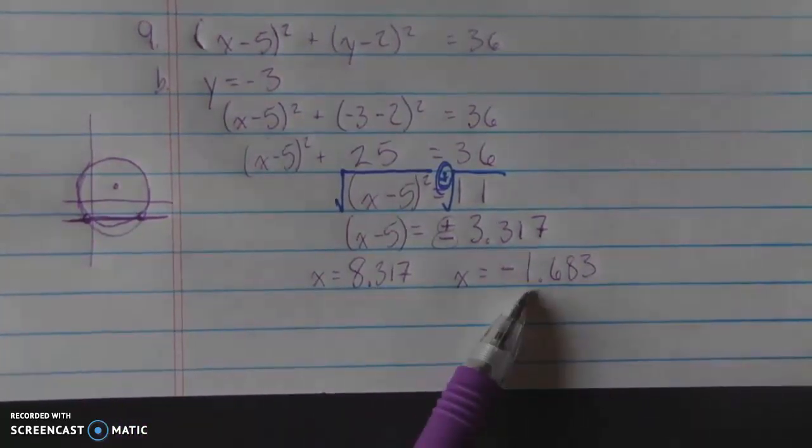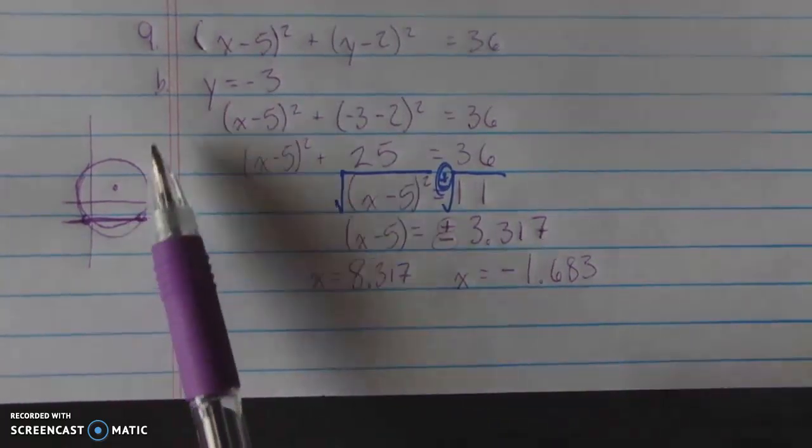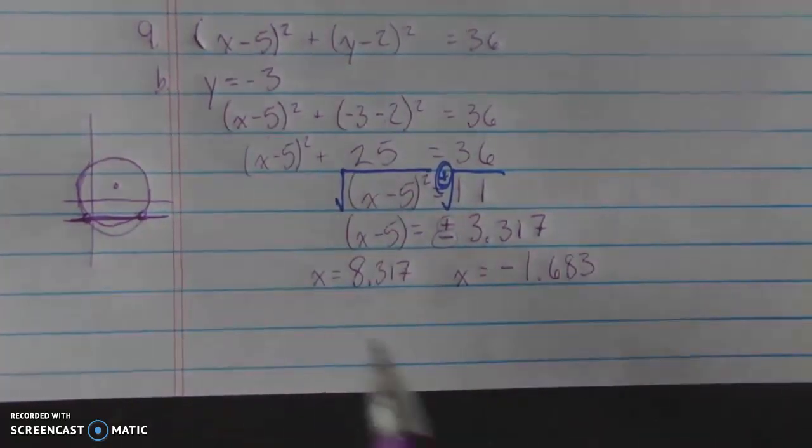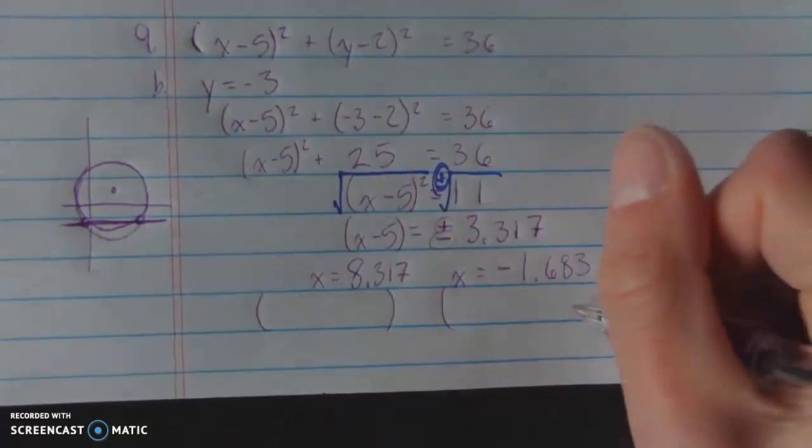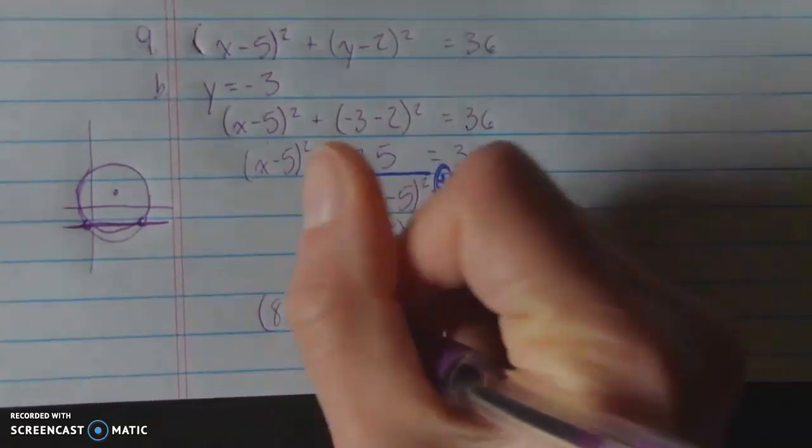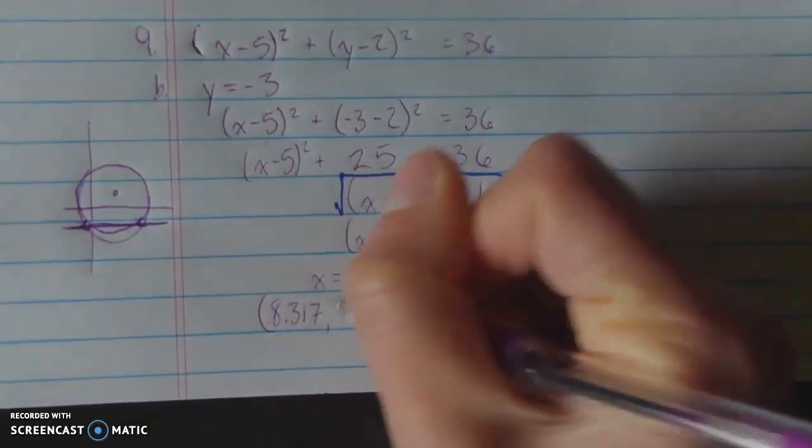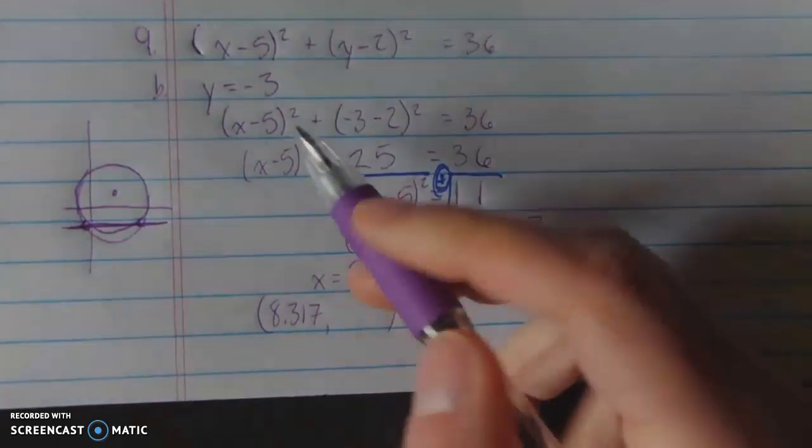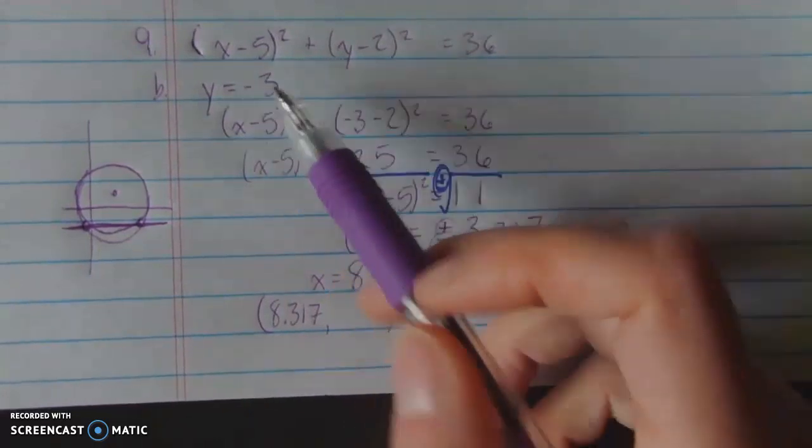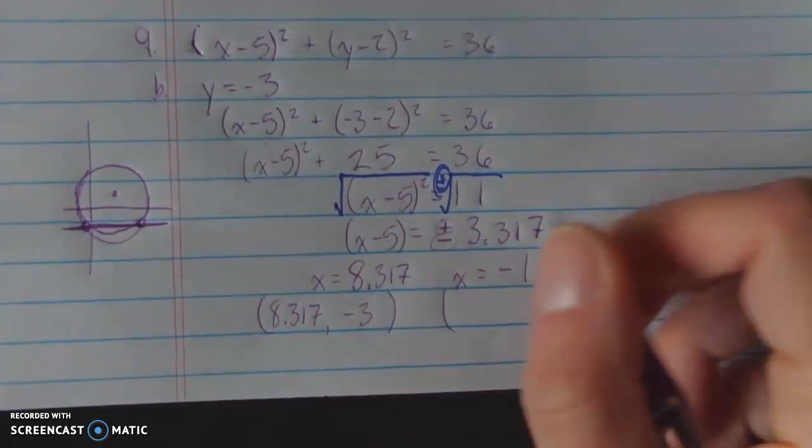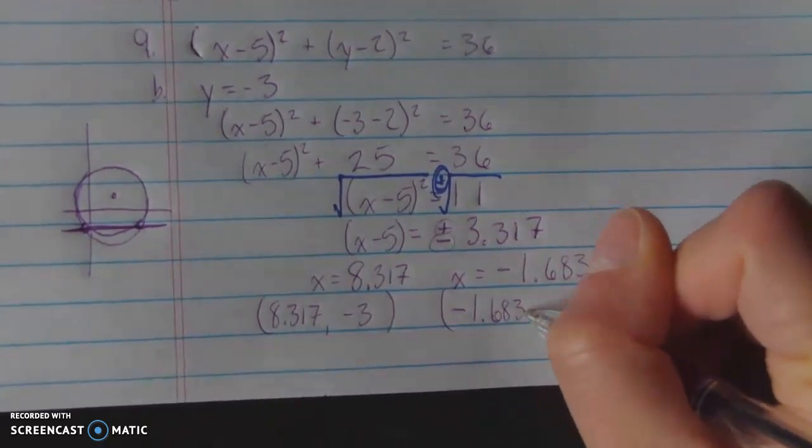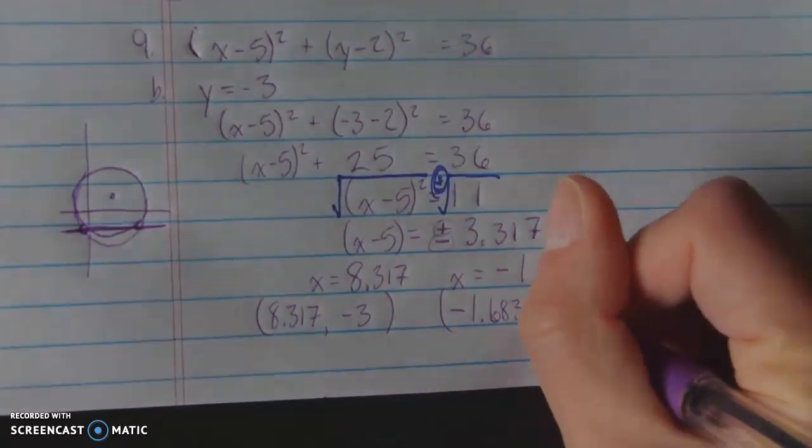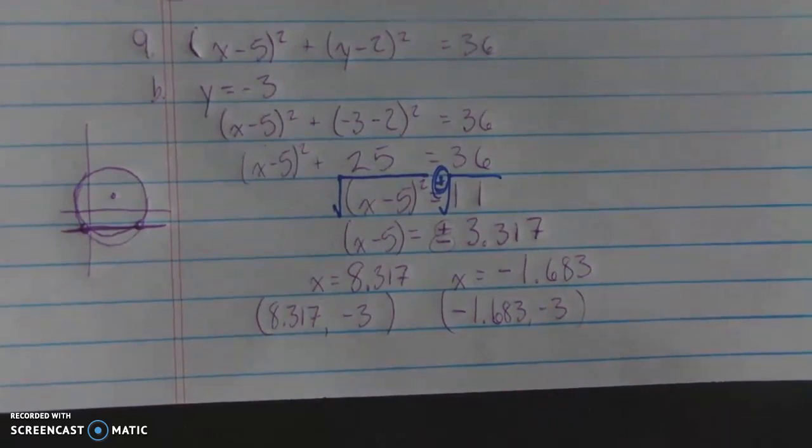Now, don't forget that while these two things do make sense, my question is asking for a coordinate, and not just for x-values. So I do need to write these in coordinate form. Since x here is equal to 8.317, then I can fill that in, and all I need is my y. And I've been told that y equals negative 3. And over here, x equals negative 1.683. Well, my y is equal to negative 3. And that is the final answer.